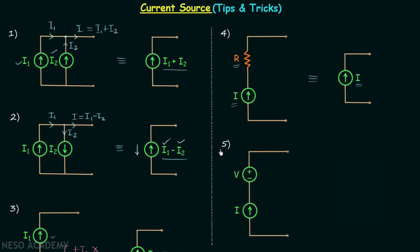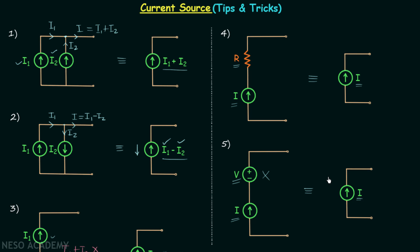In the fifth and last case, we have one current source connected in series with a voltage source. The current source provides current I and the voltage source provides voltage V. In this arrangement, you can neglect the voltage source and retain the current source only. Again, the same condition applies as in case four: this simplification can only be done while calculating parameters of the load side, not the source side.